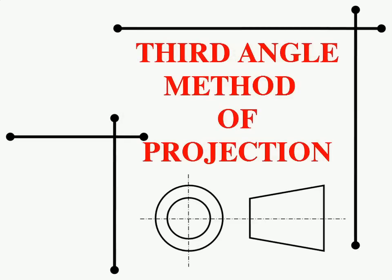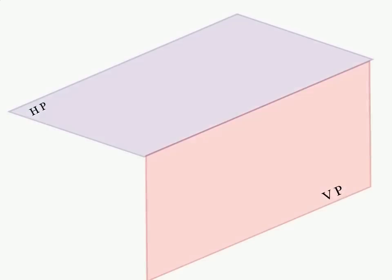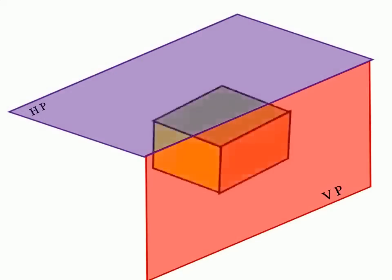In third angle method of projection, object is placed in third quadrant, that is behind VP and below HP. The plane lies between observer and object.